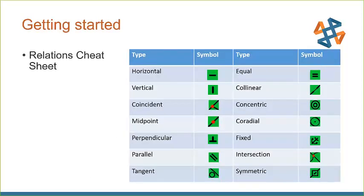For those getting started in the software, relationships are the framework that make our sketches solve and do what they're supposed to do. Those little call-outs on screen can be small and difficult to visualize. I see a lot of confusion, especially for new users, between coincident and midpoint, or parallel and equal. I've created a cheat sheet with larger icons listing what everything is — take a screenshot or send me an email and I'll share the presentation so you can print it out.